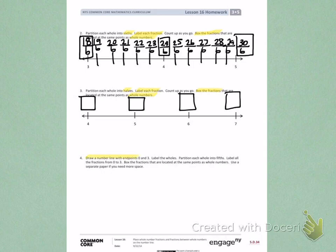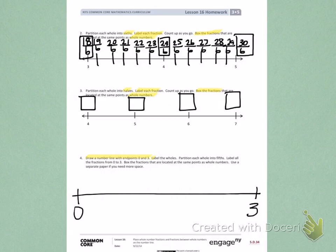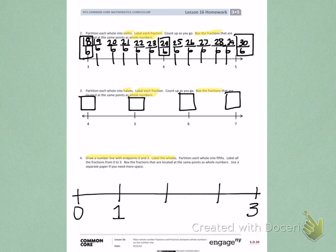So first I have to draw a number line with endpoints 0 and 3. Then I need to label the missing wholes. When I'm counting, I'm missing 1, 2, and 3 — that's three lines. But wait, I don't need to draw 3, that was my mistake. I only need to draw two lines because 3 is already there, so I have to draw 1 and 2.